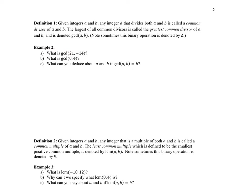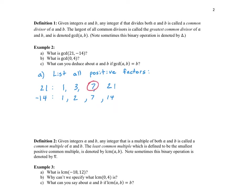What is the GCD of 21 and −14? We list all positive factors, since negative factors would never be the greatest. For 21: 1, 3, 7, 21. For 14: 1, 2, 7, 14. The greatest in common is 7, so GCD(21, −14) = 7.